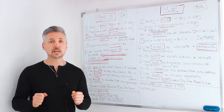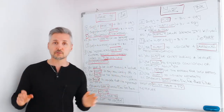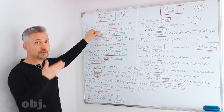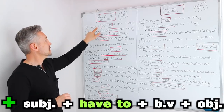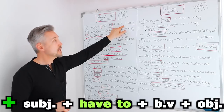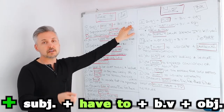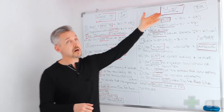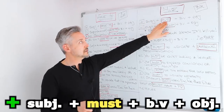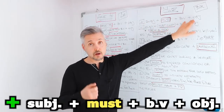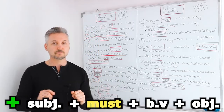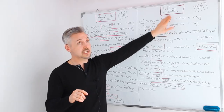They're both modal verbs and they follow the following rules. With 'have to,' the positive sentence formula is: subject + have to + base of the verb + object + time expression, if any. With 'must,' the formula is: subject + must + base of the verb + object + time expression, if any. Remember that with 'must,' we don't need 'to.'